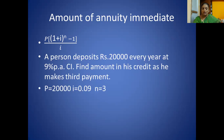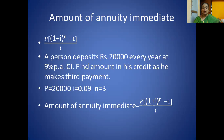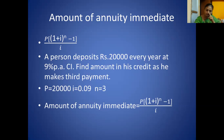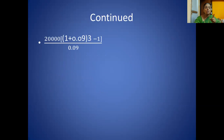We use the formula already mentioned. What is given: P = 20,000, and 9% per annum compound interest so i = 0.09, and the 3rd payment means n = 3. Putting values in the formula: 20,000 × [(1 + 0.09)^3 − 1] ÷ 0.09.